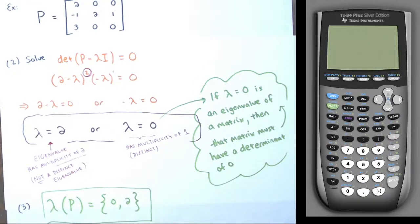The procedure is the same every time: find the characteristic polynomial as the determinant of (A − λI), set it equal to zero, find the solutions (eigenvalues), and write the spectrum. Hope you enjoy practicing problems of this nature. Thank you.